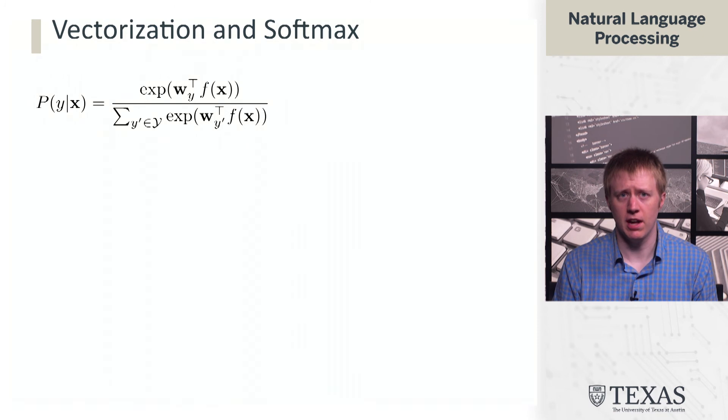The probability of a class Y is the exponential of weights associated with that class dotted with features, divided by the sum over that same kind of class score, weights dot features, for each possible class Y prime in the output space.